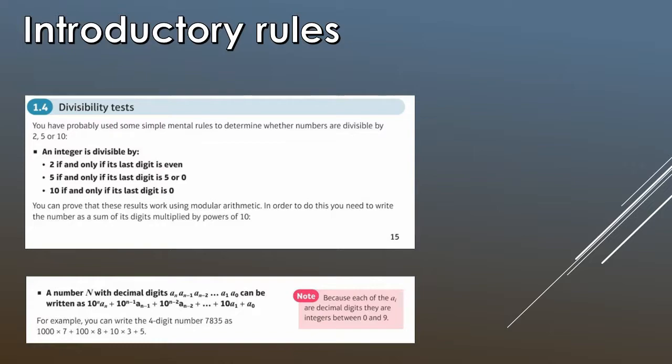And then what we're shown here at the very end is that you can prove these results using modular arithmetic. It shows that a number M with the decimal digits AN, AN-1, AN-2, can be decomposed. So it gives you the example here. 75935 can be rewritten like this. But that's just a general rule for the idea of what's going on.